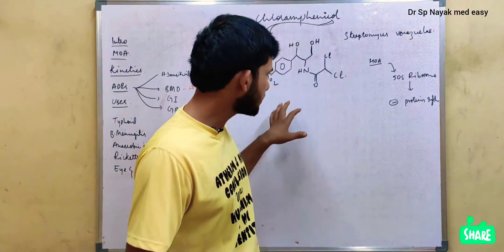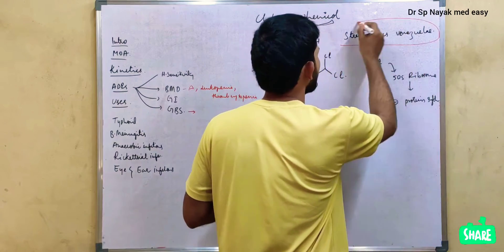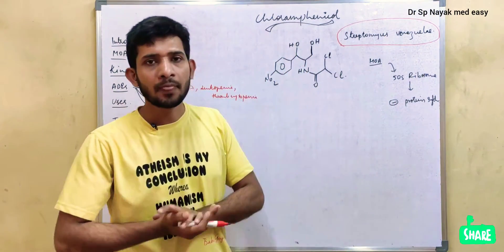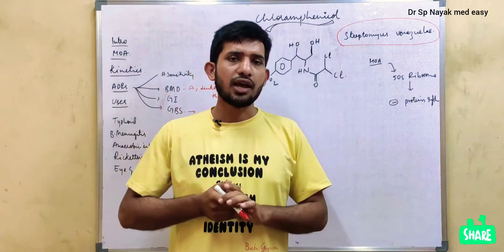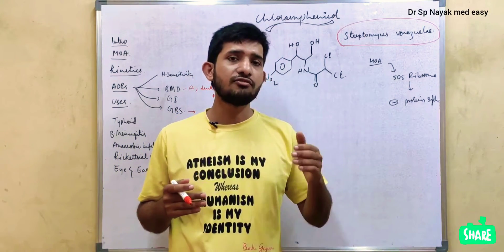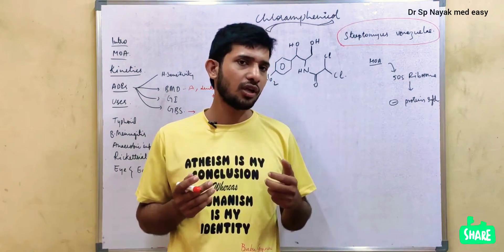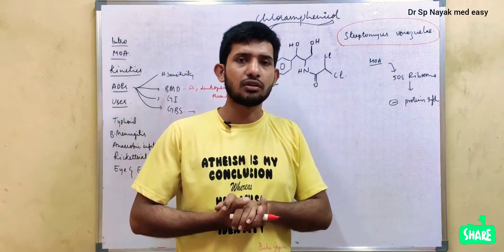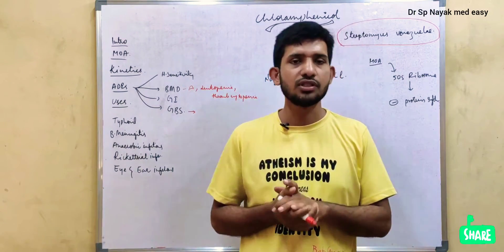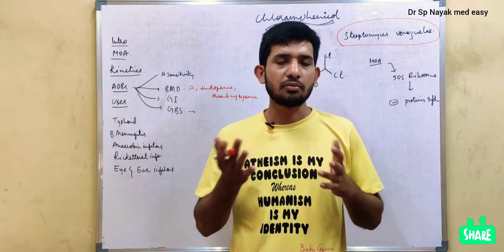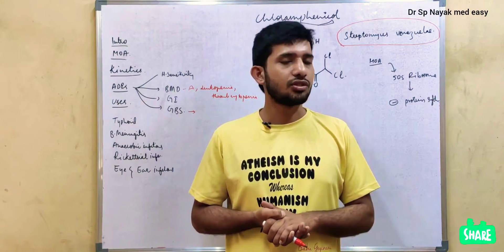Chloramphenicol is an antibiotic which is usually obtained from Streptomyces venezuelae. Streptomyces venezuelae is a bacteria and from this bacteria it is usually obtained. Remember, the antibiotics which are synthesized from other microorganisms will have high hypersensitive actions. So because of this, chloramphenicol will have hypersensitive reactions, like penicillin and cephalosporins, which are also obtained from other organisms.